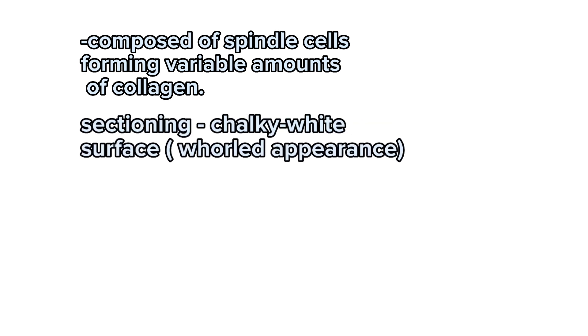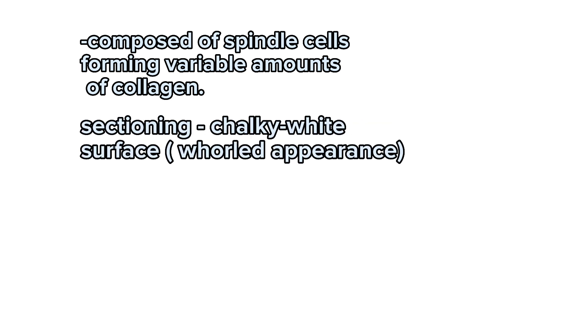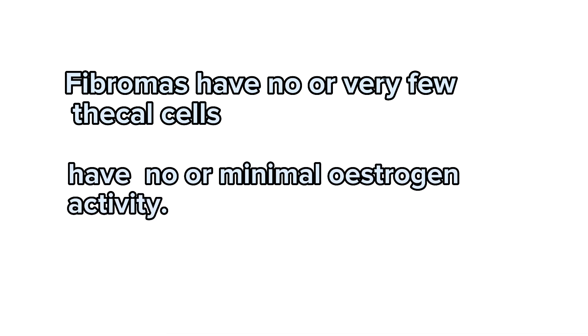It is composed of spindle cells forming variable amounts of collagen. Sectioning of a fibroma typically reveals a chalky white surface that has a whorled appearance. Fibromas have no or very few thecal cells and have no or minimal estrogen activity.